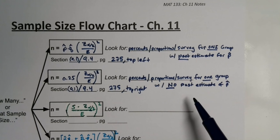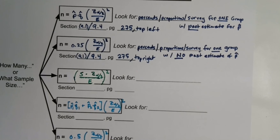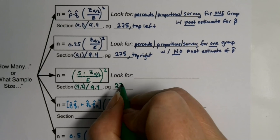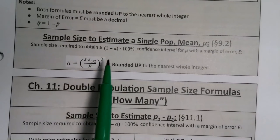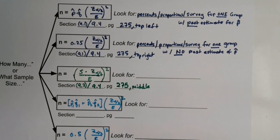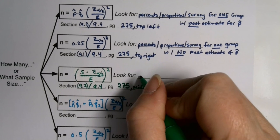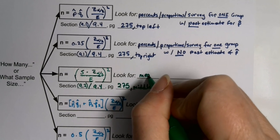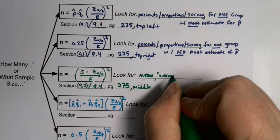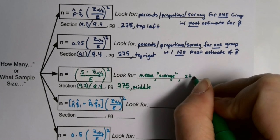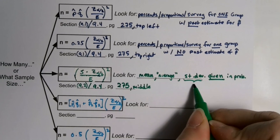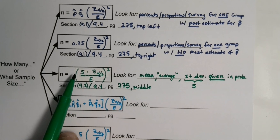The middle one — technically from section 9.2, but placed in 9.4 — is right in the middle of page 275. This one is unique because it's the only one working with means and averages. You'll see the word 'average' in the problem, and it's the only formula that has a standard deviation S given to you in the problem, because S appears in the formula itself.